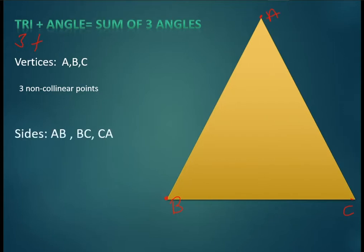A triangle has three sides: AB, BC, and CA. When a line segment joins two vertices, it is called a side of the triangle.